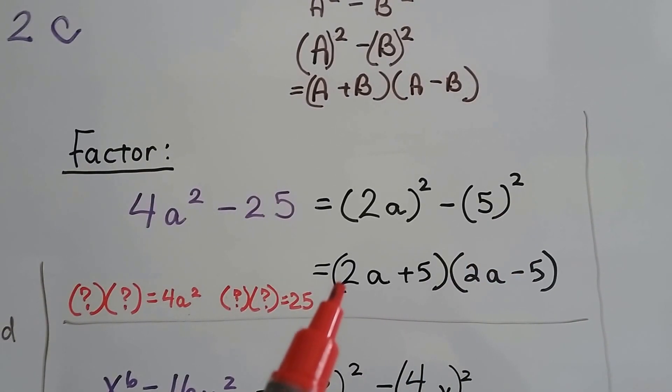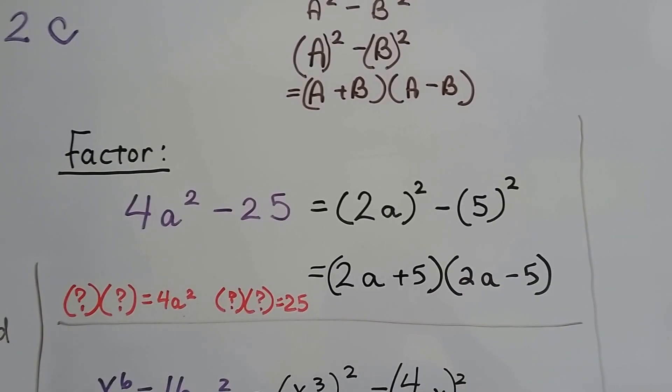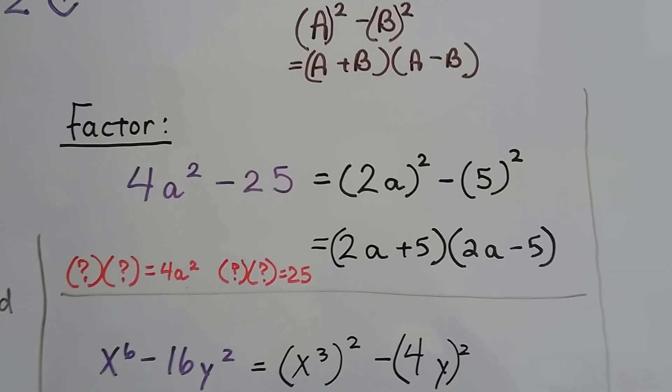Now we can open it up to (2a+5)(2a-5). Isn't that easy? You could do this. I bet you can.